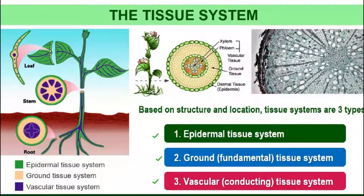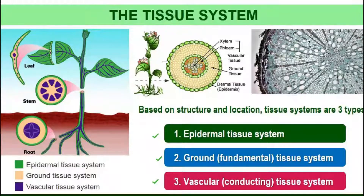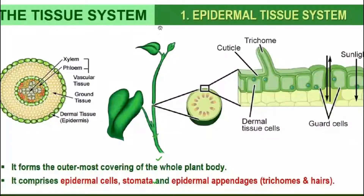Here a diagram is given to understand various kinds of tissue systems. This classification is based on the structure as well as the location. For example, the epidermal tissue system — its location is the outermost layer. The tissue present outside is known as the epidermal tissue. Other structures found in the epidermal tissue system include epidermal cells and stomata.